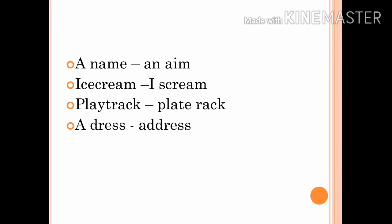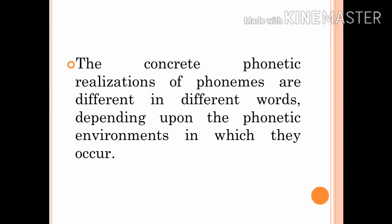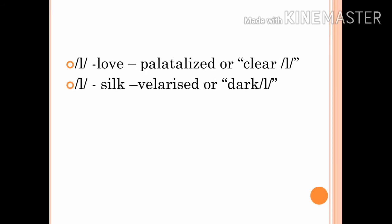So that's about juncture or transition. Next we have assimilation. The concrete phonetic realizations of phonemes are different in different words depending upon the phonetic environments in which they occur. For example, consider the words 'love' and 'silk'.